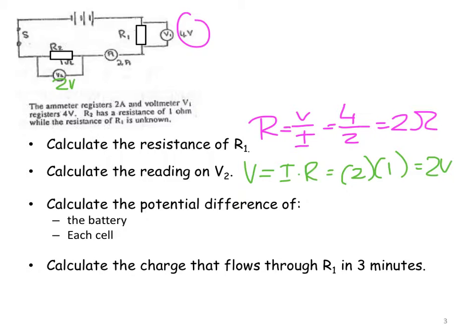Calculate the potential difference of the battery. So now I can put those two together. We haven't started talking about internal resistance yet, so we can just take the external as being the potential difference of the battery, which is going to be 4 plus 2, which is equal to 6 volts, and each cell then, if there are three of them, is 6 divided by 3, which is equal to 2 volts.